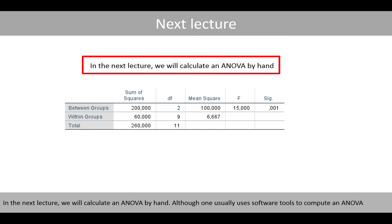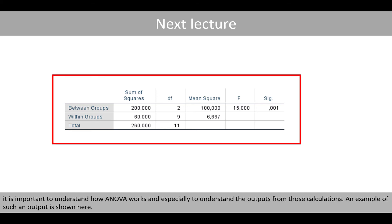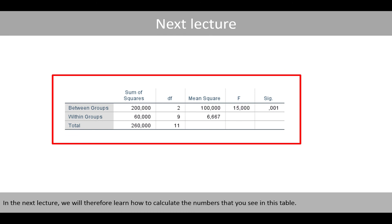In the next lecture, we'll calculate ANOVA by hand. Although one usually uses software tools to compute an ANOVA, it is important to understand how ANOVA works, and especially to understand the outputs from those calculations. An example of such an output is shown here. In the next lecture, we'll therefore learn how to calculate the numbers that you see in this table. Thanks for watching.